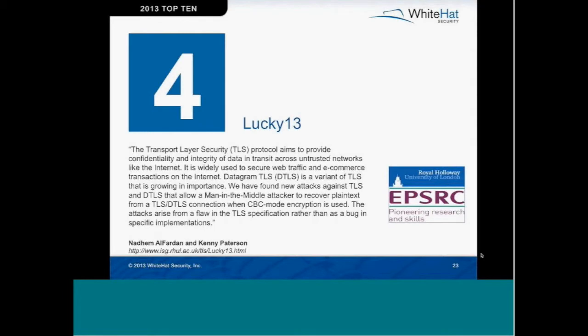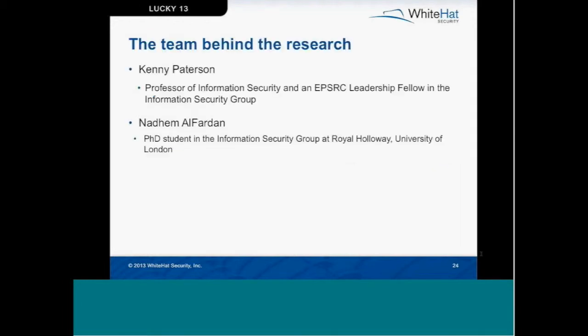Number four is the Lucky 13 attack. Lucky 13 was a new attack against Transport Layer Security and Datagram Transport Layer Security that allows man-in-the-middle attackers to recover plain text in TLS or DTLS connections when cipher block chaining mode encryption is used. It's important to note that this attack arose from a flaw in the TLS specification and not necessarily a flaw in its implementation.